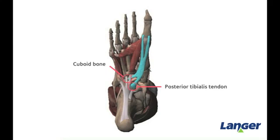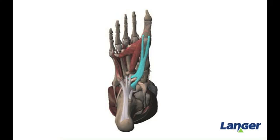One origin is on the cuboid bone and the other origin is on the posterior tibialis tendon. The insertion point for the muscle is the medial and lateral base of the phalanges of the greater toe. The function of the muscle is to flex the big toe at the MTP joint.